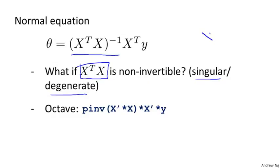The issue or the problem of X transpose X being non-invertible should happen pretty rarely. And in Octave, if you implement this to compute theta, it turns out that this will actually do the right thing. I'm getting a little technical now, but Octave has two functions for inverting matrices. One is called pinv and the other is called inv.